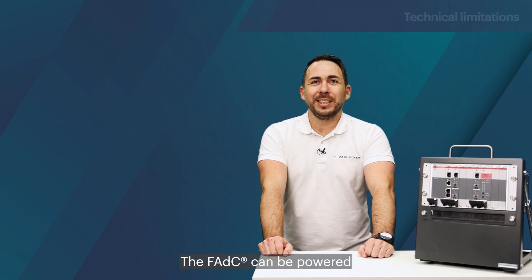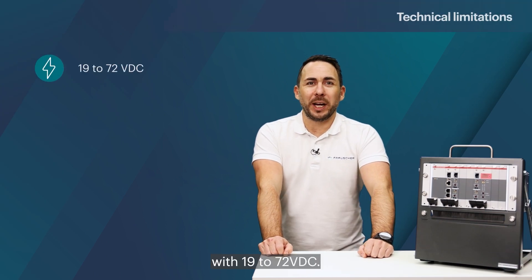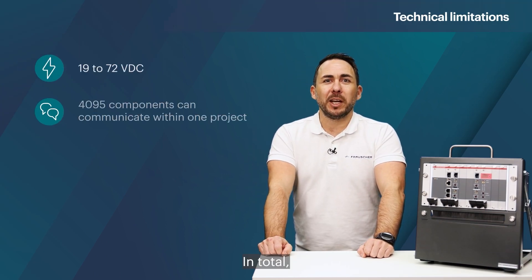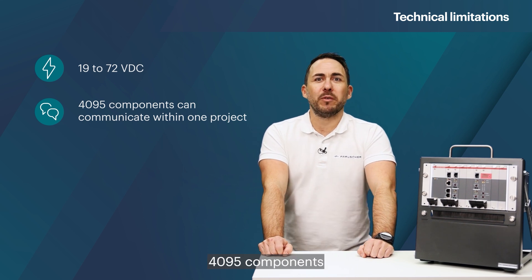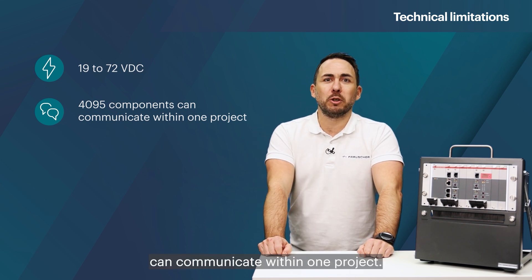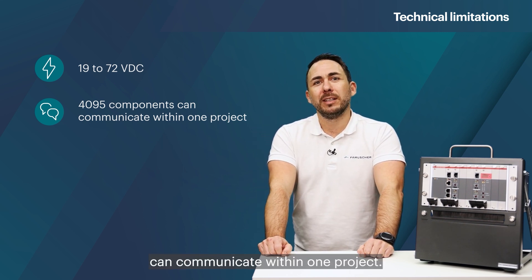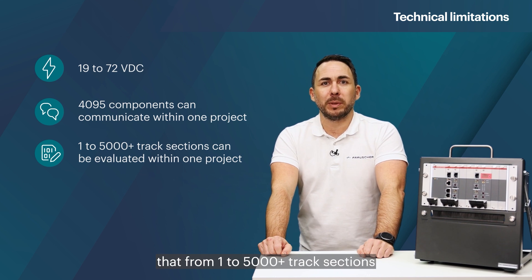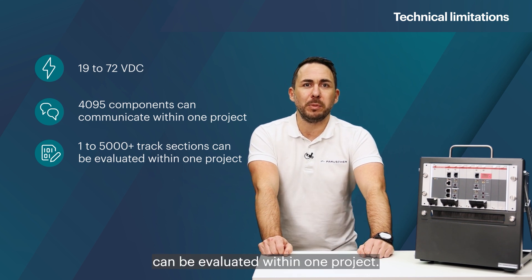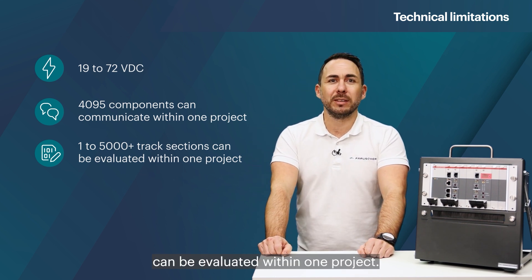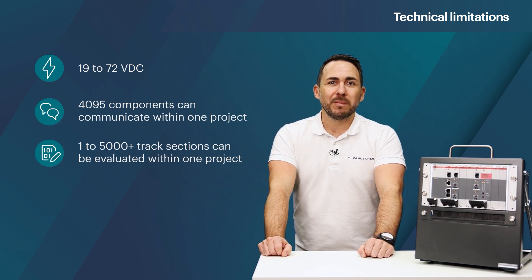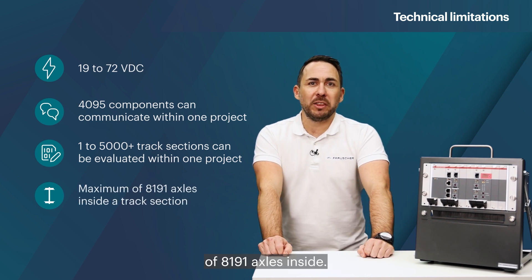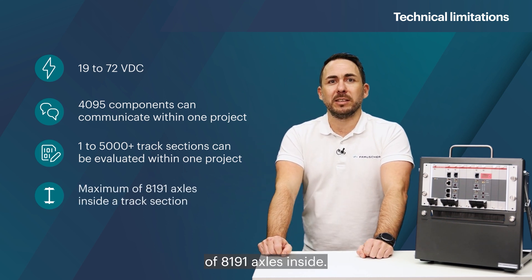The FADC can be powered with 19 to 72 Volt DC. In total, 4095 components can communicate within one project. This theoretically means that from 1 to 5000 plus track sections can be evaluated within one project. A track section can have a maximum of 8191 axles inside.